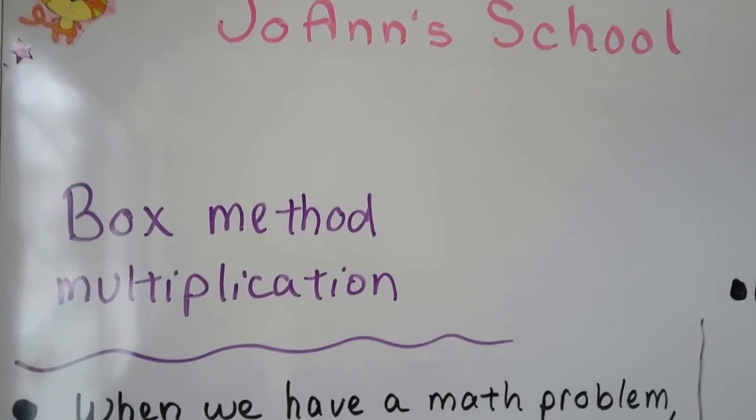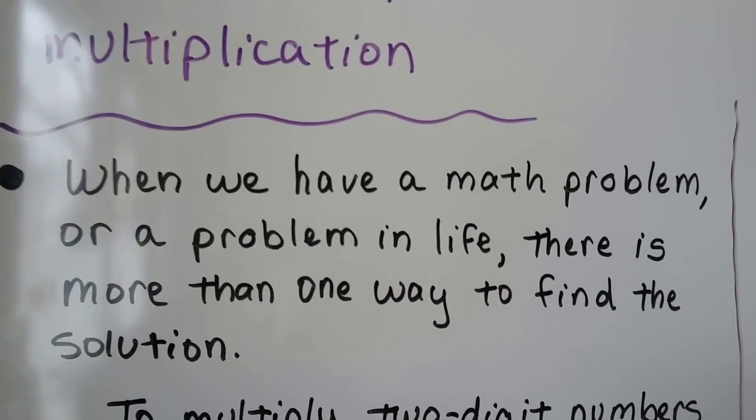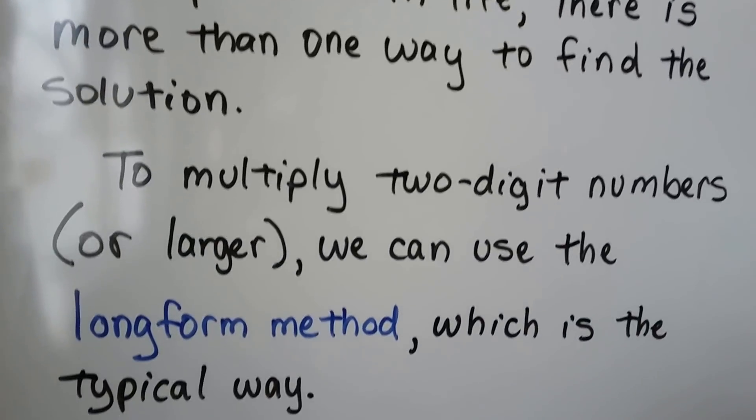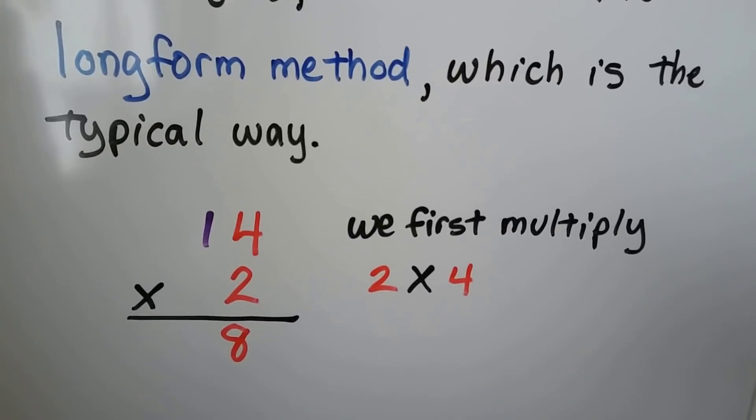Box method multiplication. When we have a math problem or a problem in life, there's more than one way to find the solution. To multiply two-digit numbers or larger, we can use the long form method, which is the typical way.